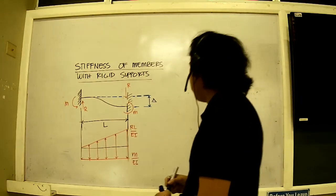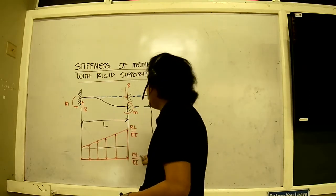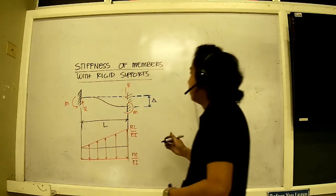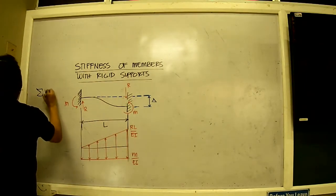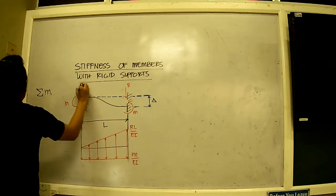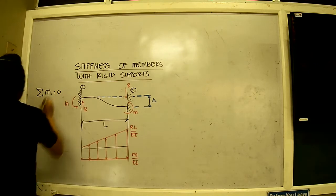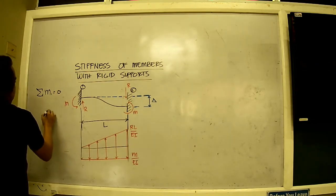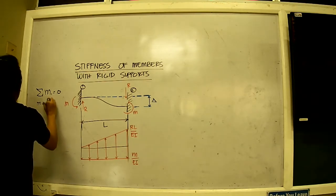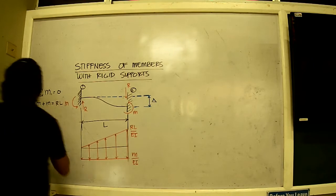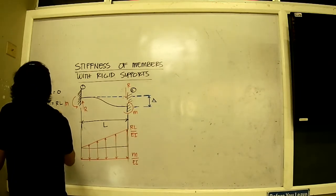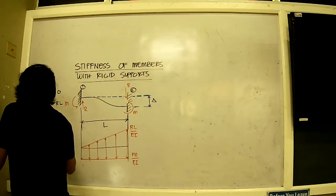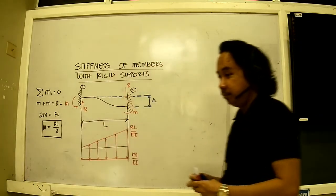I would like to present moment in terms of R. I go with equilibrium for this figure here. Moment at, let's say this point here, I'll just call this as point one and this is point two. Moment at point one is equal to zero. So that means M plus M is equal to R times L. So in this case we have 2M is equal to RL. M consequently is equal to RL over 2. So this is our moment here.